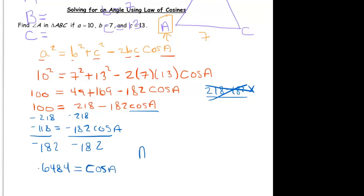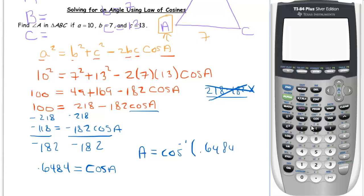And that means A equals cosine inverse of 0.6484. And so we take out our calculator and we get 49.579.